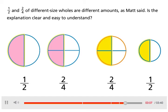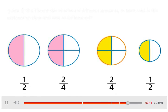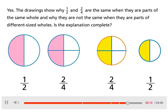Is the explanation clear and easy to understand? Yes. The drawings show why one-half and two-fourths are the same when they are parts of the same whole, and why they are not the same when they are parts of different sized wholes.